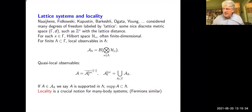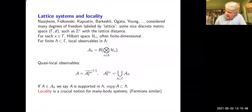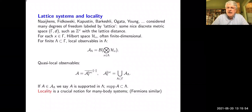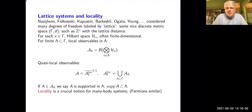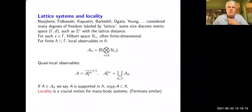We have our finite-dimensional Hilbert space at each site, and then we have our algebra of local observables associated with any finite subset lambda. As Amanda just explained, these algebras of local observables are included in each other — you can always extend by identities. So you can take the union, make sense of this, complete it, and get a nice C*-algebra of quasi-local observables.